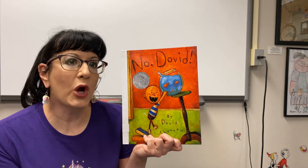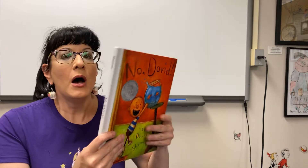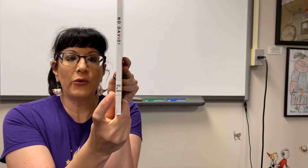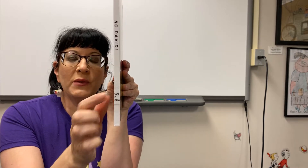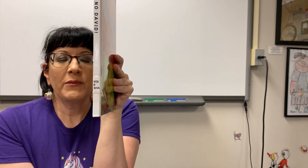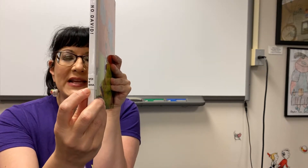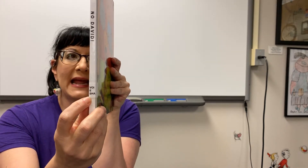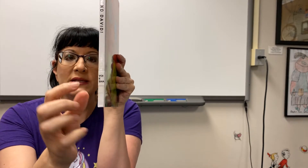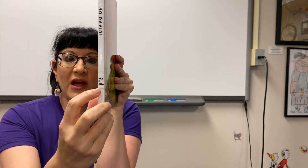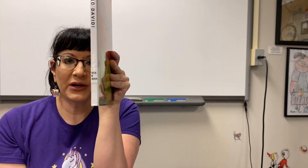If you remember, our fiction books are shelved in alphabet order by the first three letters of the author's last name. We see the E there — that means it's on the everybody shelves or the short shelves. We see the first three letters of his last name, David Shannon: S-H-A, Shannon. So we know it's on the everybody shelf, on the S shelf, and that's where we would find the books.